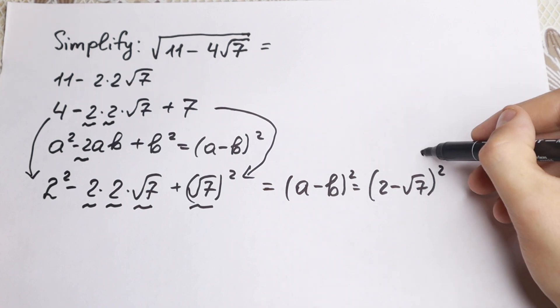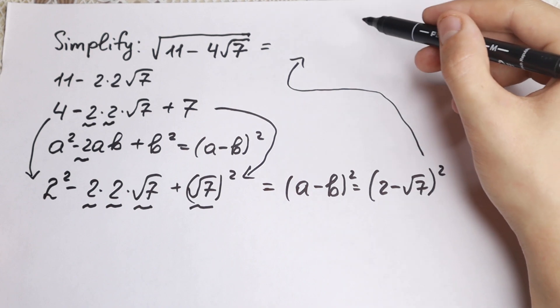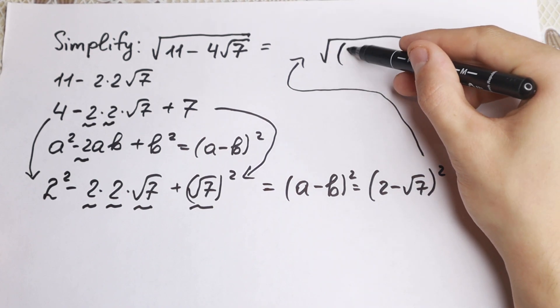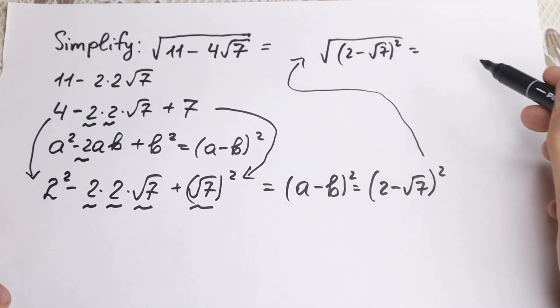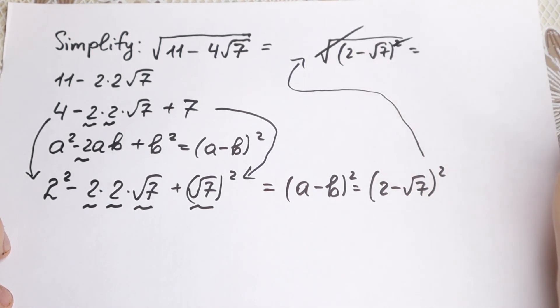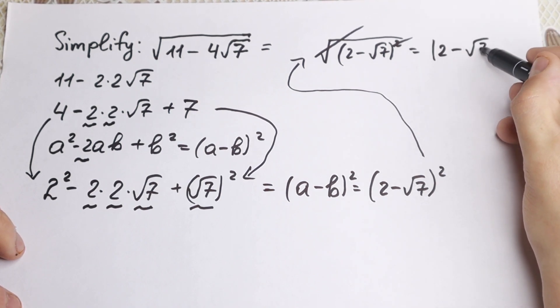And right now I'm going to plug in this expression to the original question. So this expression we can change to square root of (2 minus square root of 7) squared. And if we plug in all of this, what will we have? We can easily cancel our square root and our square sign. If we cancel this, this is equal to absolute value of 2 minus square root of 7.